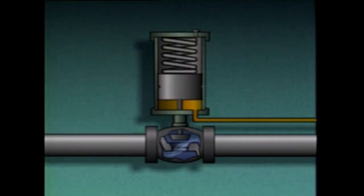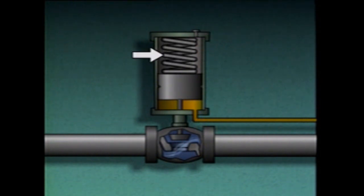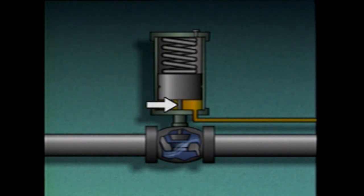This hydraulic actuator consists of a cylinder, a fluid port at the base of the cylinder, a vent, a spring, a piston, and a piston rod which is connected to the valve disc.